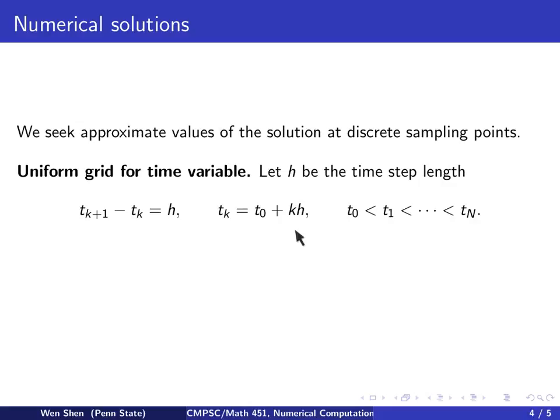This gives a simple way of computing tk, which is just t0 plus k times h, so how many steps you take, until you reach the final time tn, where n is the final time step.